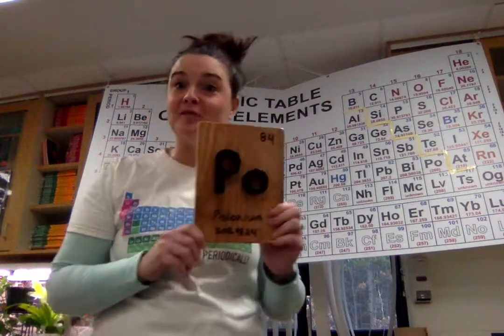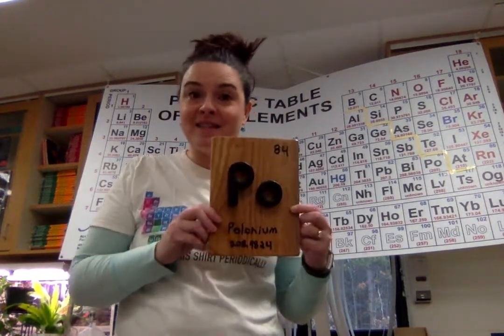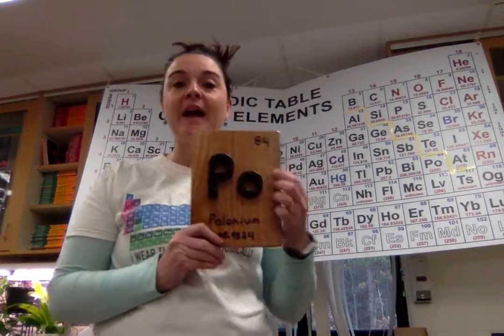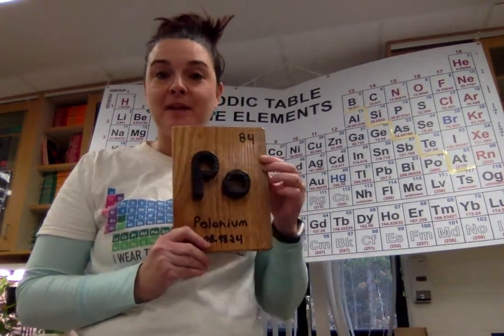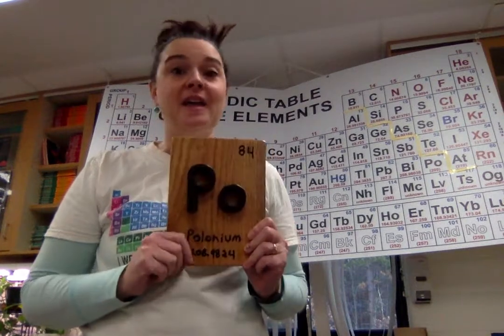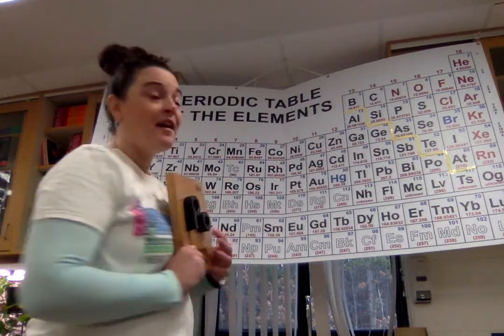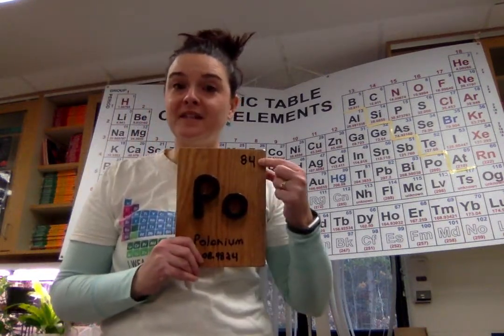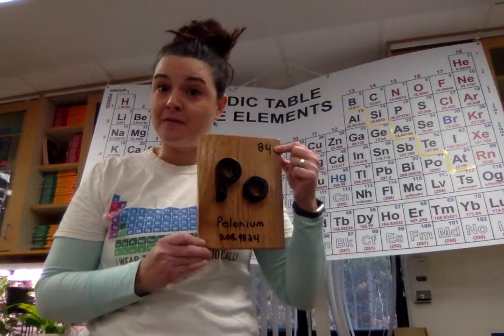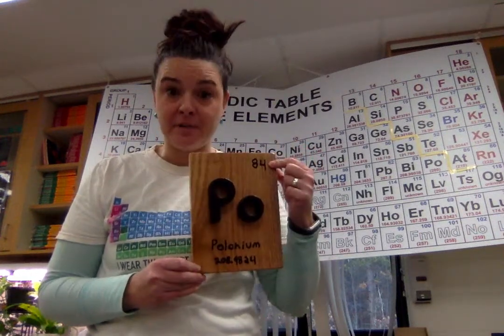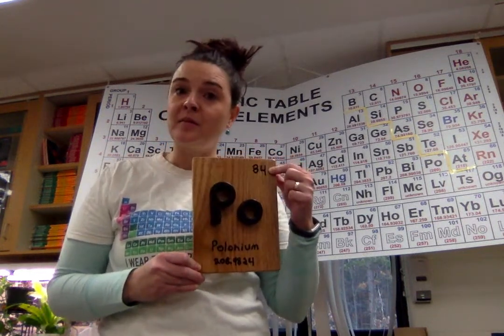Let's review what we learned about each element block from the periodic table. I have with me this really cool wooden element block that someone made me years ago. The middle part of the periodic table block is the symbol. Remember, the rule for the symbol is the first letter is always capitalized. If there's just one letter, it's capitalized. As you can see behind me, all of the element symbols follow the same rule. This number up here in the upper right-hand corner - for polonium, it's number 84 - and that is its atomic number. The atomic number is the number of protons in the nucleus, and it's also the number of electrons.